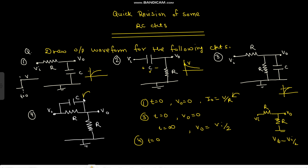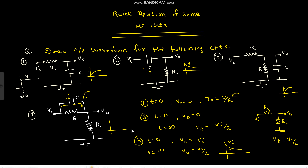In the fourth circuit, at T equals zero the capacitor is short-circuited, so V_out equals V_in. At T equals infinity the capacitor is open-circuited, so V_out equals V_in by two. The output goes from V to V by two. Initially there was zero charge on the capacitor, and at infinity the capacitor voltage equals the resistor voltage which is V by two, so the output goes from V down to V by two.